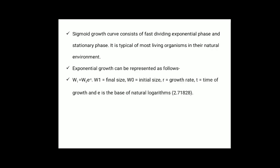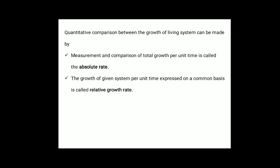Exponential growth can be represented as: W1 = W0 × e^(rt), where W1 is the final size, W0 is the initial size, r is the growth rate, t is the time of growth, and e is the base of natural logarithm, that is 2.718. Quantitative comparison between growth of living systems can be made by two measures: measurement and comparison of total growth per unit time is called absolute growth rate, and the growth of a given system per unit time expressed on a common basis is known as relative growth rate.